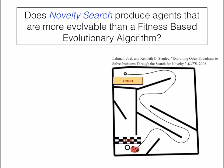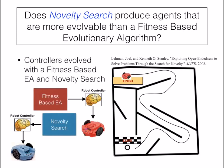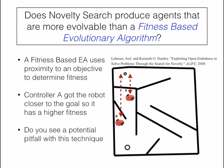In their paper, they use the following setup. The goal is to evolve a controller to get a robot from the start location all the way to the goal location. To evolve the controllers, they're going to use a fitness-based genetic algorithm and NoveltySearch. In the fitness-based evolutionary algorithm, the proximity of an agent to the objective determines its fitness.